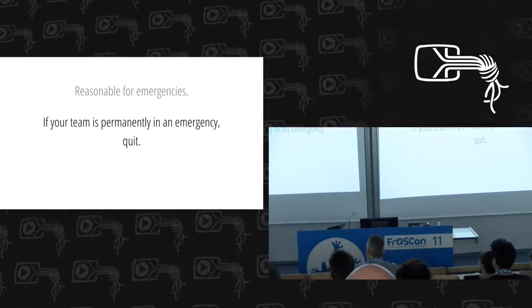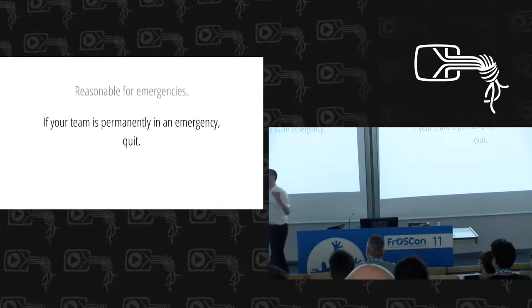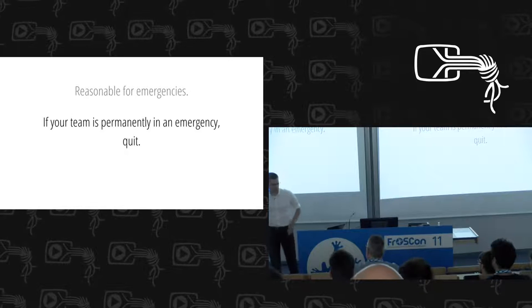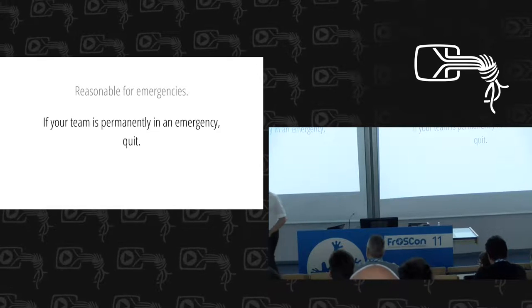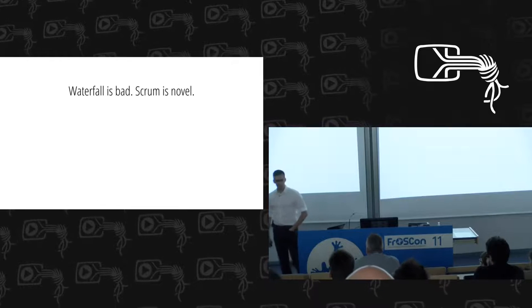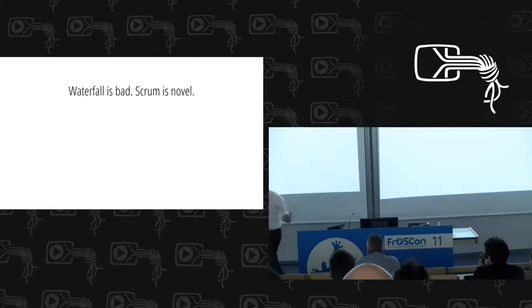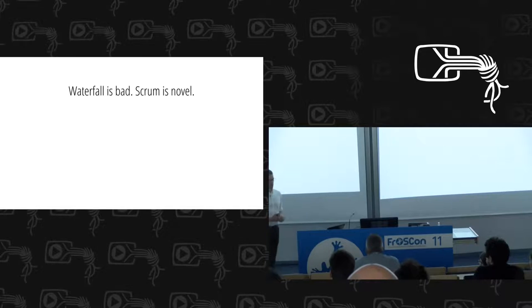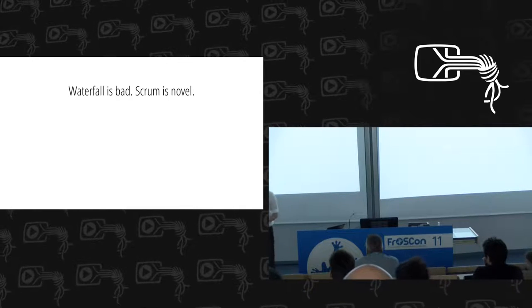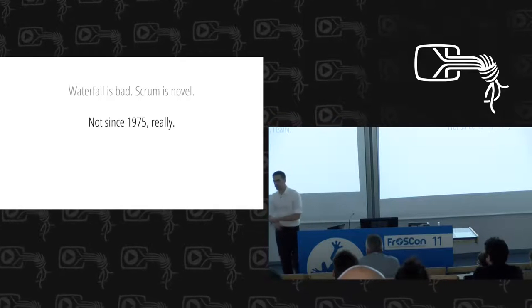One thing Scrum advocates frequently say in defense of Scrum — or agile more broadly — is that the waterfall method is bad, and Scrum is novel, like manna from heaven that finally sets us free from waterfall. This is almost a straw man, and it's also not true. The whole novelty argument hasn't been novel since about 1975.